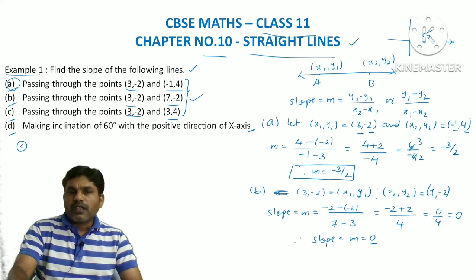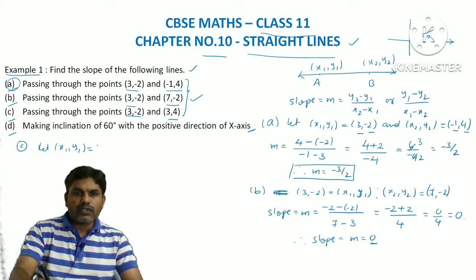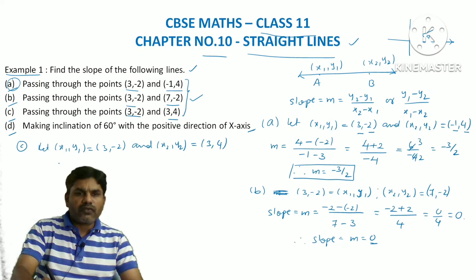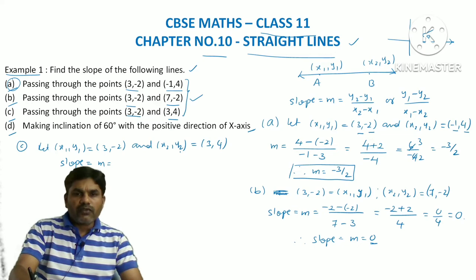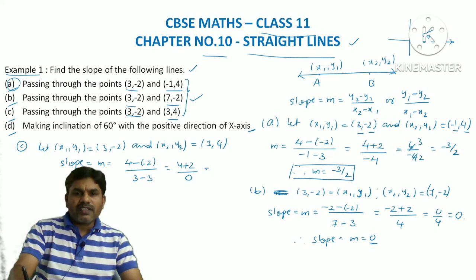Coming to part (c): the points given are (3, -2) and (3, 4). Let x1, y1 = (3, -2) and x2, y2 = (3, 4). Using the same formula, slope m = (y2 - y1) / (x2 - x1) = (4 - (-2)) / (3 - 3). Be careful when taking y2 and y1 — you should not mix them with x-values.